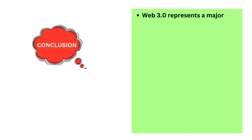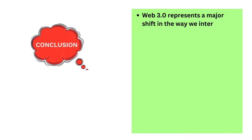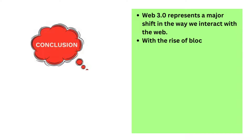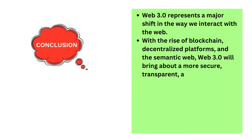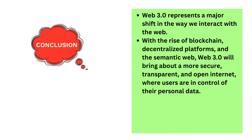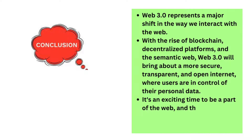In conclusion, Web 3.0 represents a major shift in the way we interact with the web. With the rise of blockchain, decentralized platforms, and the semantic web, Web 3.0 will bring about a more secure, transparent, and open internet, where users are in control of their personal data. It's an exciting time to be a part of the web, and the possibilities that Web 3.0 brings are virtually limitless.